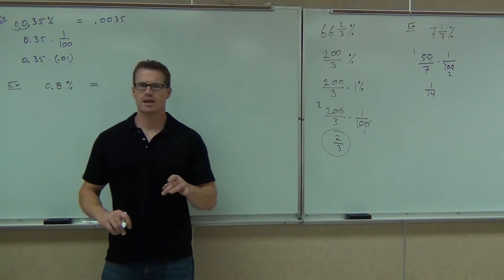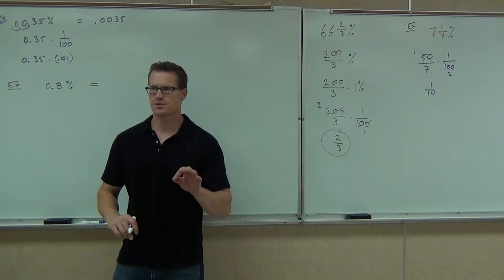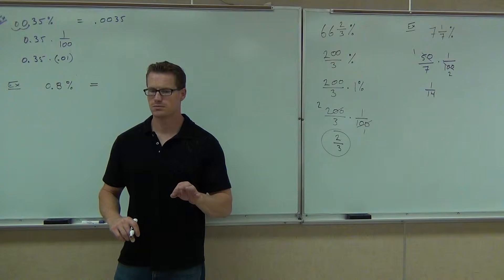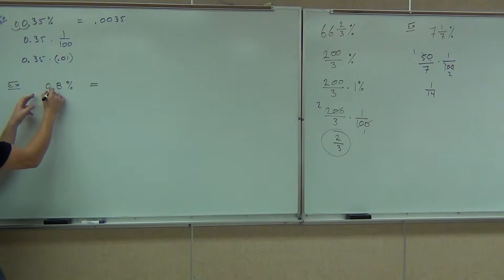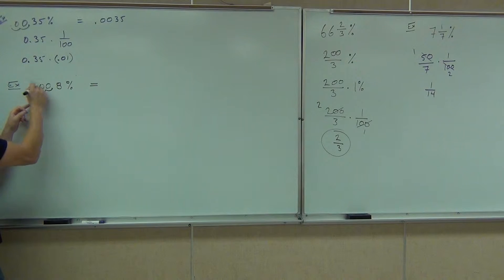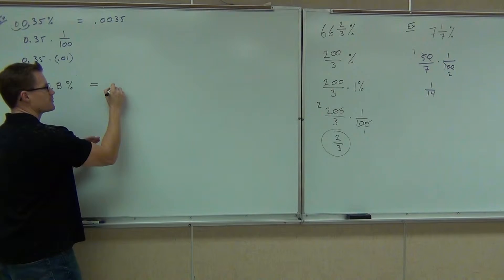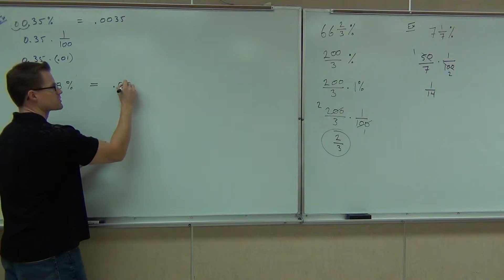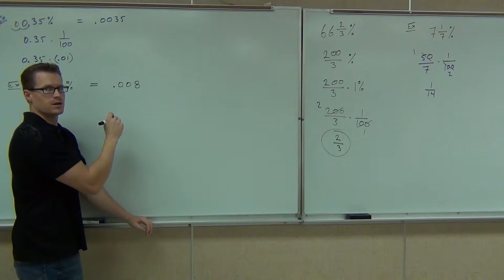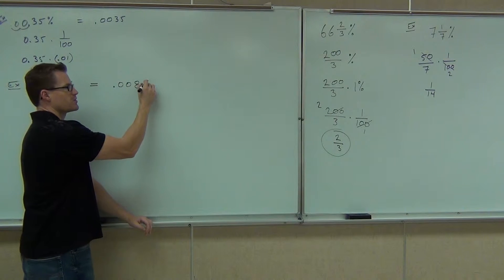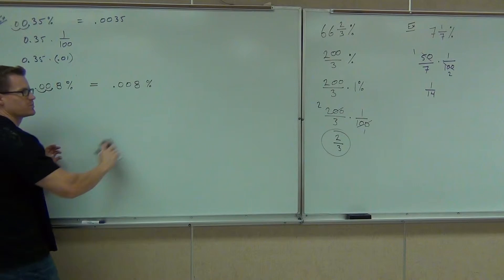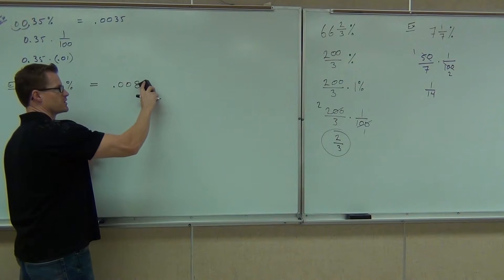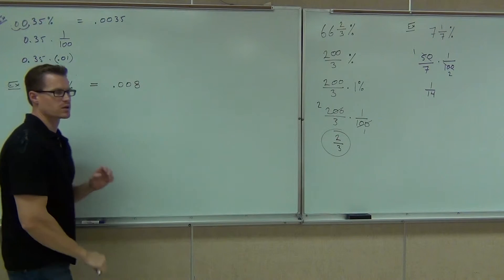Are you going to get 80 or 0.008? 0.008. Good. Because we know to change from a percentage to a decimal, I move that two spots to the left — I need to create a zero. I'm going to get 0.008. Should I have a percent sign after that? No. I'm changing from a percent to a decimal, so that would be incorrect. We don't want that. We want 0.008.